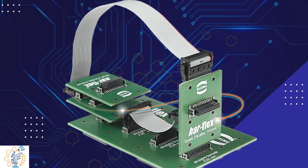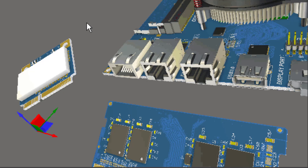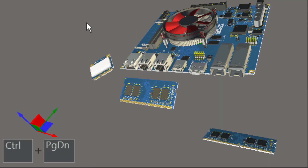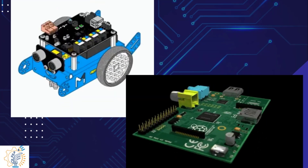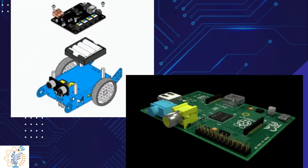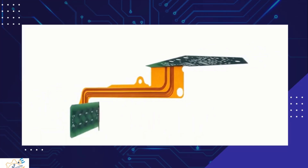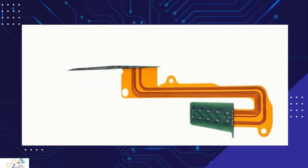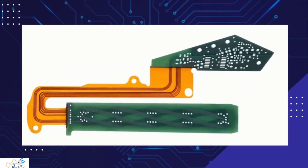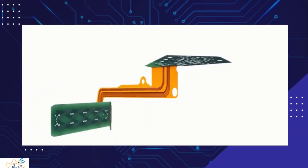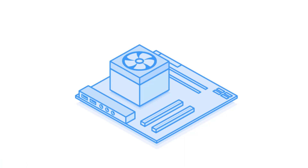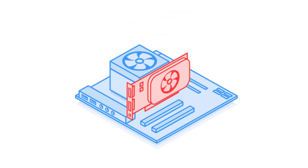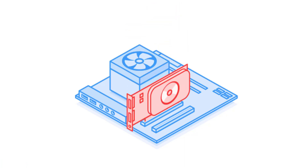The process of multi-board design typically starts by creating a physical outline of each board within the system. It is crucial to plan the interconnections between the boards, which can involve the use of standardized connectors such as pin headers. The design process usually begins with schematic capture, followed by creating a comprehensive PCB layout for each individual board. The final step involves generating a documentation package to accompany the design.